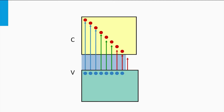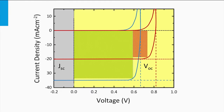If we now consider an absorber material with a lower band gap, we see that more photons in the spectrum can excite charge carriers. This material will result in large short circuit current densities. However, due to the smaller band gap, the splitting of the quasi-Fermi levels and the resulting open circuit voltage will become smaller. This is reflected in the blue JV curve. The JV curve of the solar cell with the low band gap material has a larger short circuit current density, whereas the open circuit voltage is smaller.